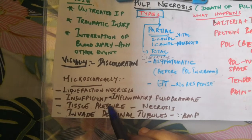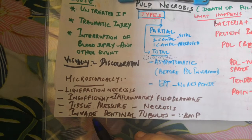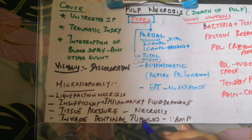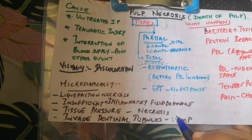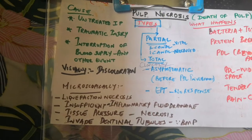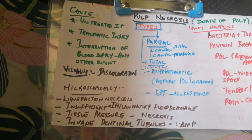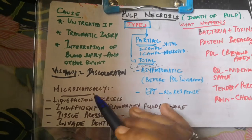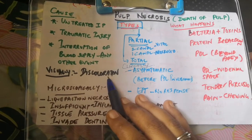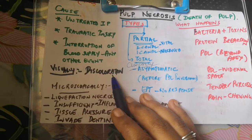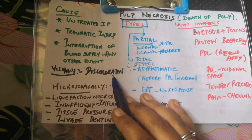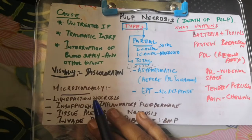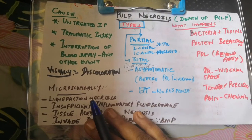The necrotic particles and inflammatory exudate invade the dentinal tubules. This is why during root canal treatment we perform biomechanical preparation — to remove the infected dentinal tubules containing necrosed tissue. Visually, you may see discoloration in anterior teeth, appearing gray or pinkish-blue. This is the overall view of pulpal necrosis.